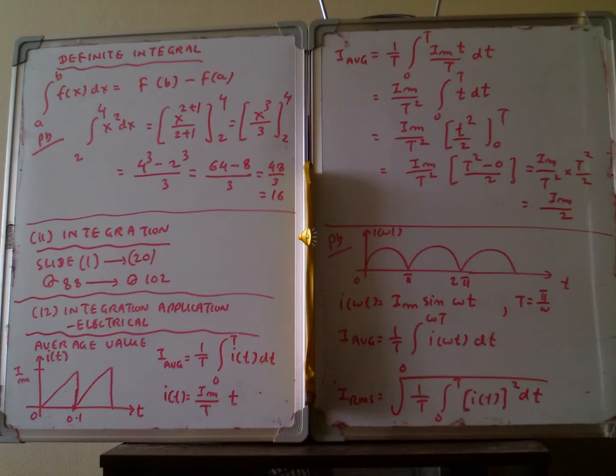The next one is definite integral. We have to find the value of that definite integral exactly. So integration of F(x)dx from the limit a to b, the answer will be F(b) minus F(a).